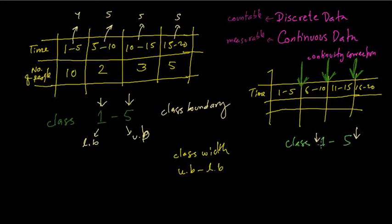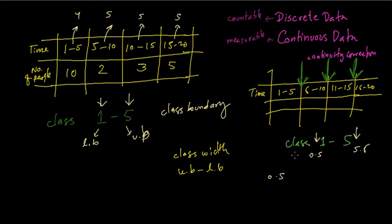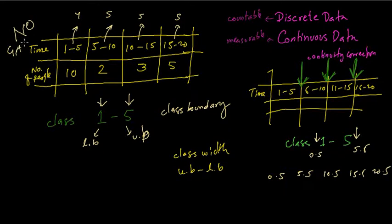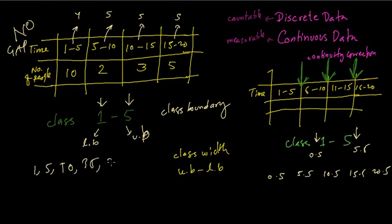So the boundaries become 0.5 and 5.5 for the first class. The class boundaries are then: 0.5, 5.5, 10.5, 15.5, and 20.5. However, when there is no gap in the data, we do not need continuity correction, and the boundaries remain 1, 5, 10, 15, and 20.